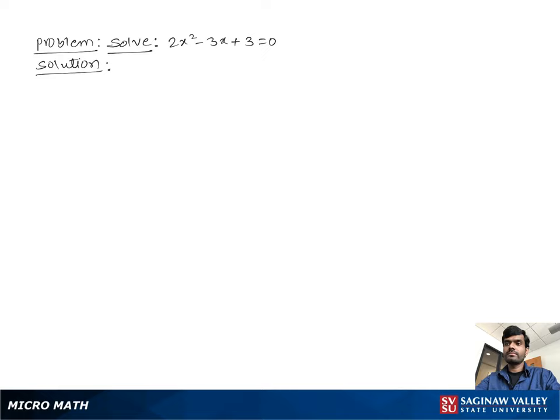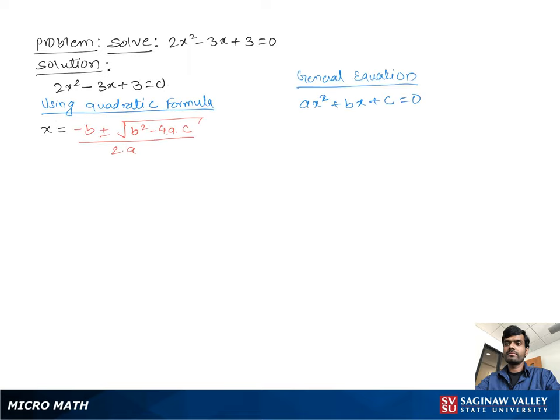Solve 2x squared minus 3x plus 3 equal to 0. Now, using the quadratic formula, x equals negative b plus or minus square root of b squared minus 4ac, over 2a.